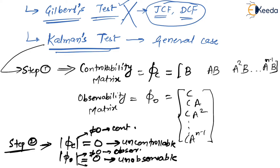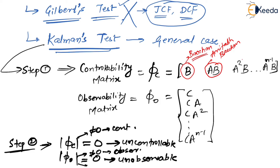Now how to remember this formula? This is B — let me call it 'Bachchan,' like Amitabh Bachchan. Then A·B is 'Amitabh Bachchan B' — meaning Abhishek Amitabh Bachchan. What is next? A²B — two times A and B — which is Abhishek Amitabh Bachchan. Then Aishwarya Abhishek Amitabh Bachchan. You just keep going and you will get up to A^(n-1)B. This is how you can remember it.